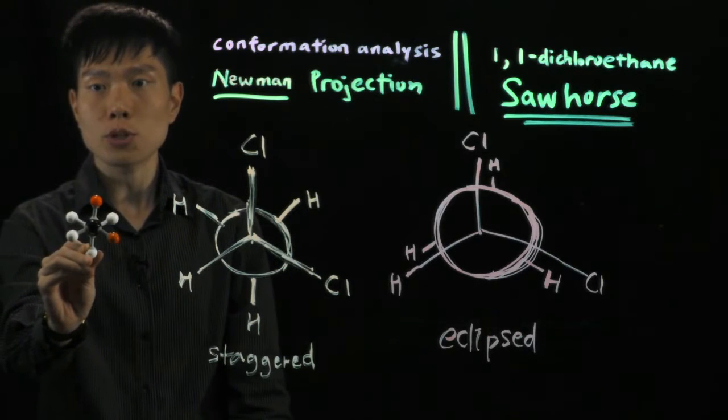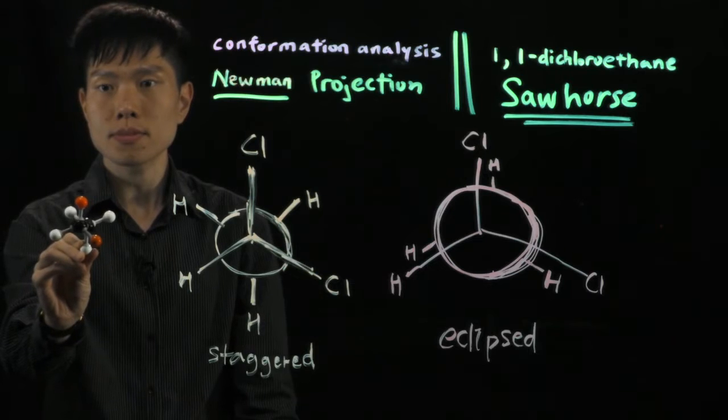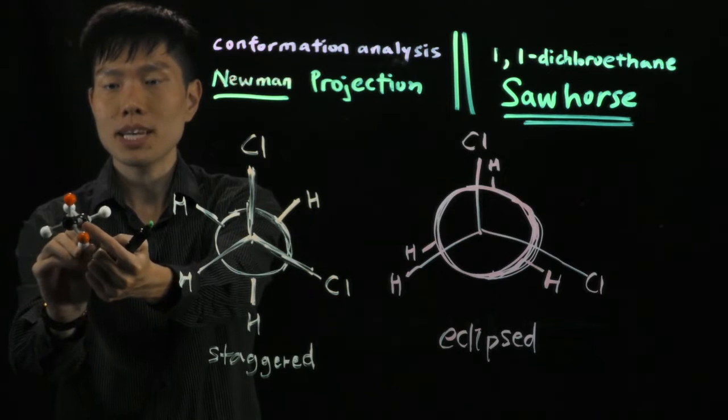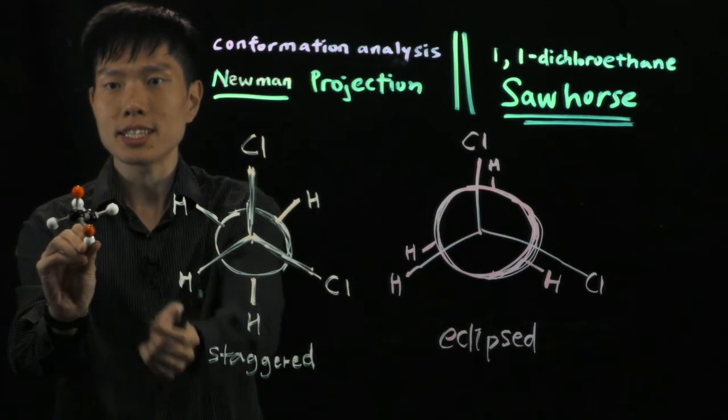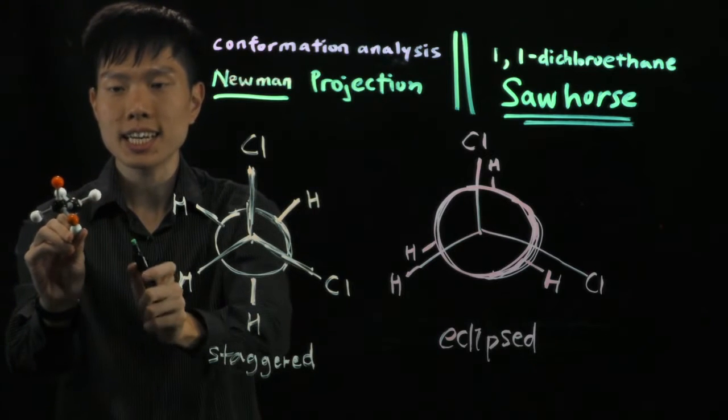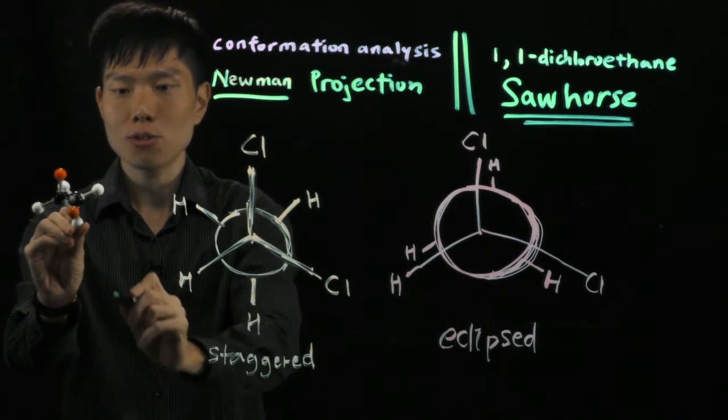So if I rotate this molecule at an angle, what do you see? Now you see both carbon atoms - carbon at the back and carbon at the front. So when you translate to Sawhorse, you draw what you really see here, and I'm going to show you how to do it.